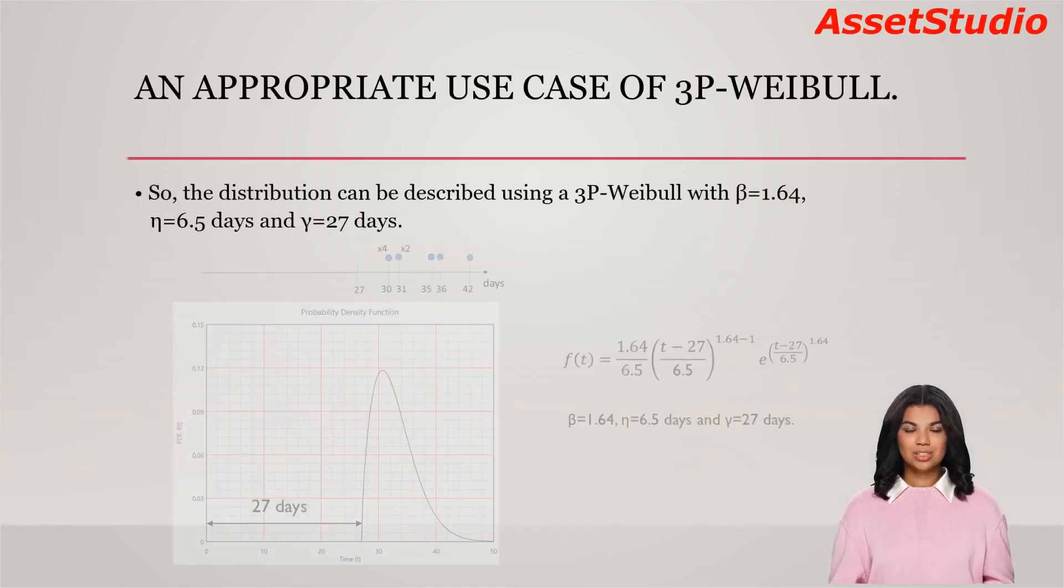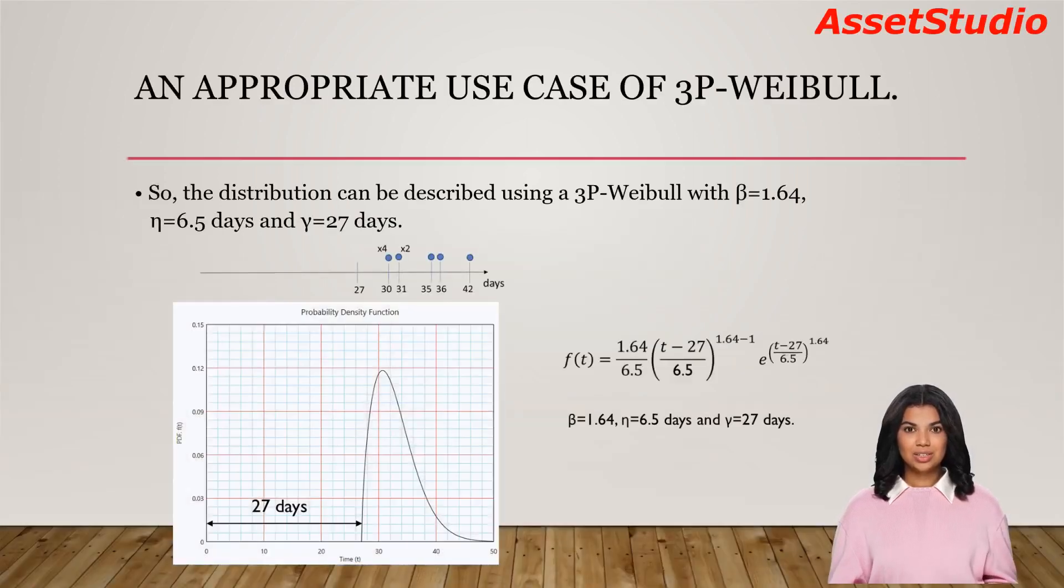This example illustrates the case where gamma is a value you need to provide, and then transform the data for fitting a 2-parameter Weibull. It is very unlikely to determine via statistical analysis that the admin plus shipment time is 27 days. The analyst knows this because they understand the situation in which the data is collected.